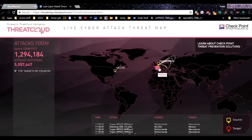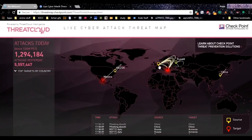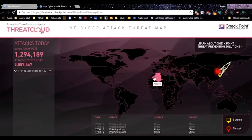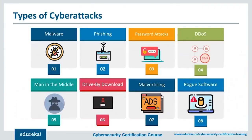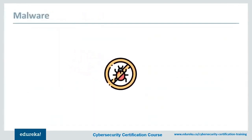As you can see, someone from the Netherlands is actually attacking one location, and someone from the USA was attacking Mexico. It's a pretty interesting site and gives you a scale of how many cyber attacks are actually happening all the time in the world. Looking at all these types of cyber attacks, it's only necessary that we educate ourselves. So these are the eight cyber threats we're going to be discussing today, starting with malware.